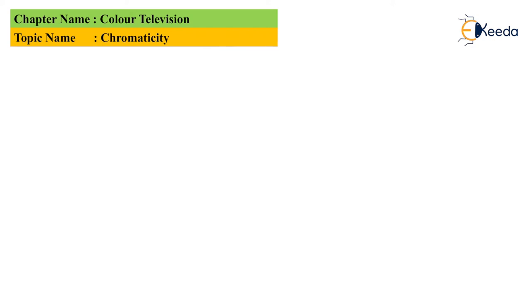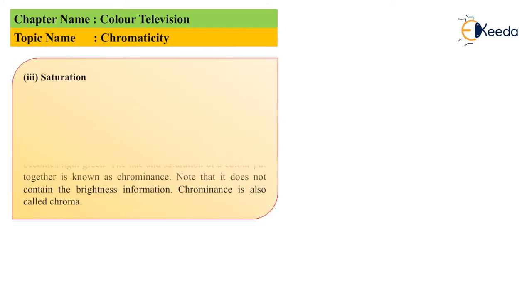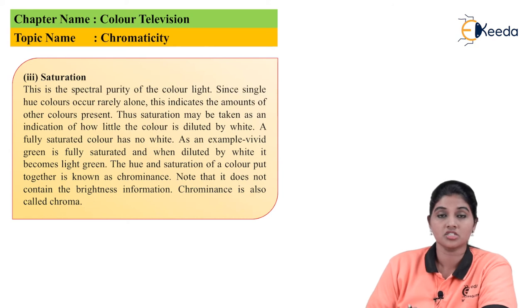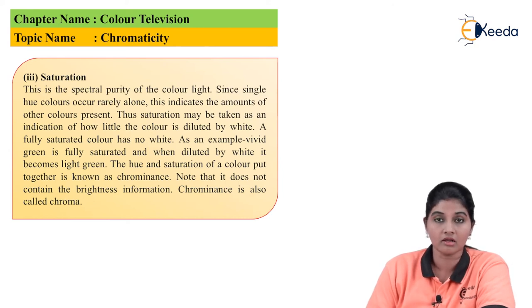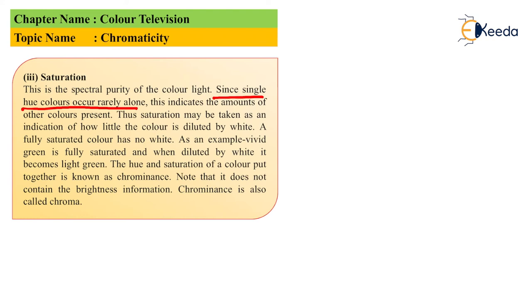Now let's move to saturation. Spectral purity of the color light is called saturation. Single hue colors occur rarely alone. This indicates the amount of other colors present. Saturation may be taken as an indication of how the color is diluted by white. For example, a fully saturated color has no white. A vivid green is fully saturated, and when it is mixed with white, it results in light green.